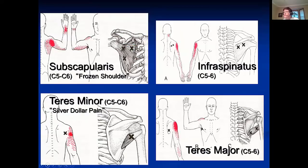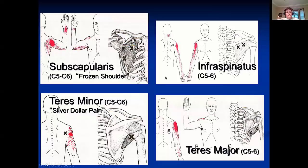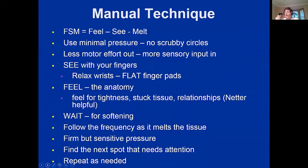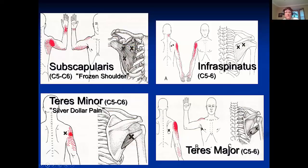Coracobrachialis is C6-7, biceps brachii is C5-6, the deltoid is C5-6. Subscapularis is an internal rotator and adductor located under the armpit — C5-6. The teres minor is in the back just below the infraspinatus, also C5-6. Teres major, which is an internal rotator, is also C5-6. These are the muscles you're going to feel and put your hands on — they will be tight and tender.